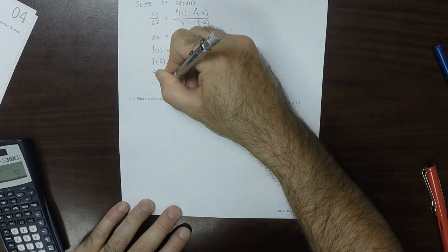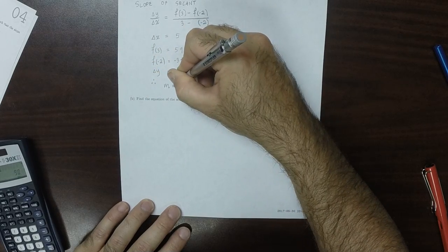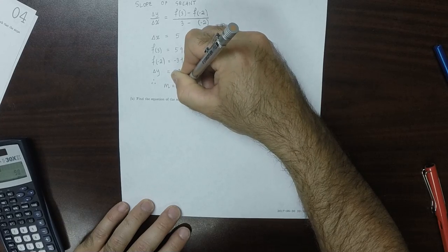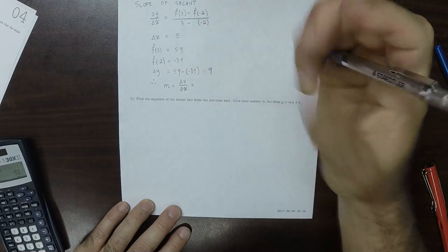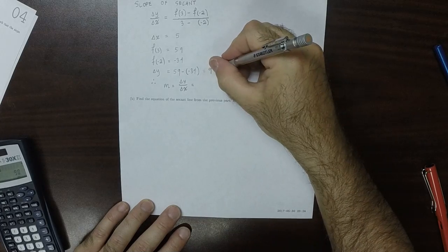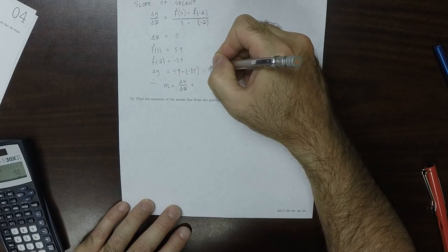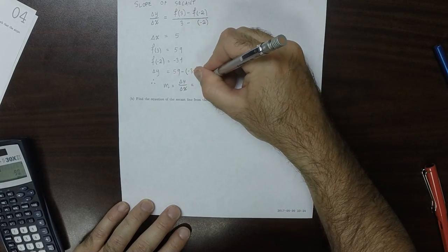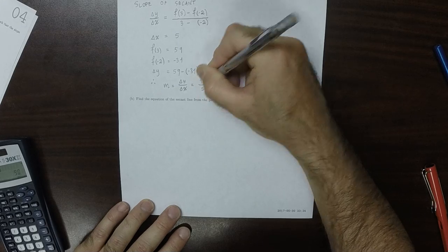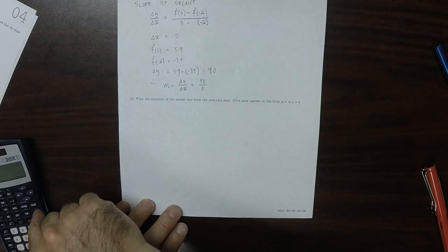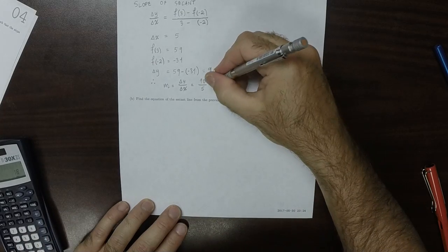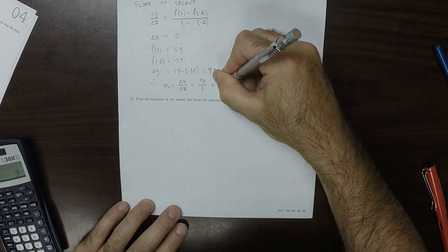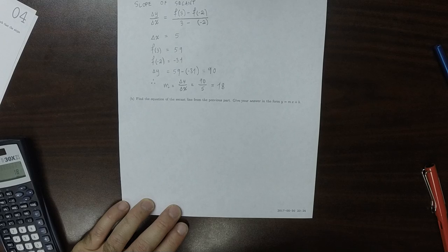As a result, slope is the change in y over the change in x, which is 90 divided by 5, and 90 divided by 5 should be 18. It is. So that is the slope of the secant line.